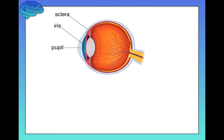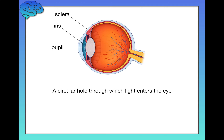Next, we have the pupil. The pupil is a circular hole through which light enters the eye. The pupil can constrict or dilate — it can expand or contract — and this happens pretty much automatically. When you're in a dark environment, you want to dilate the pupil as much as possible to allow as much light in as possible. But when you walk outside on a really bright day, you want to constrict your pupil because too much light could hurt your eye or at least be uncomfortable. So your pupil constricts to only allow a little bit of light in.